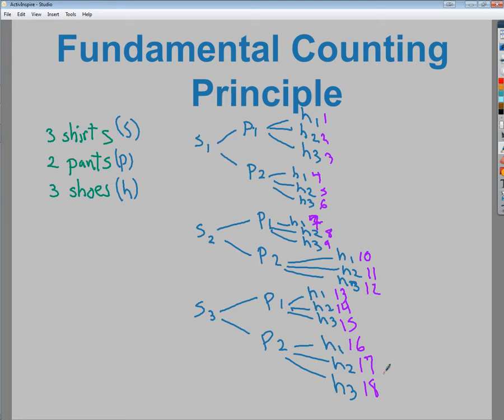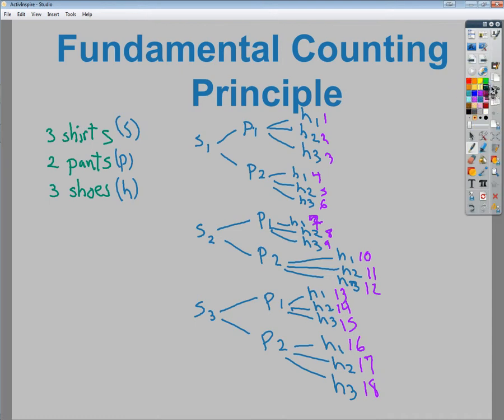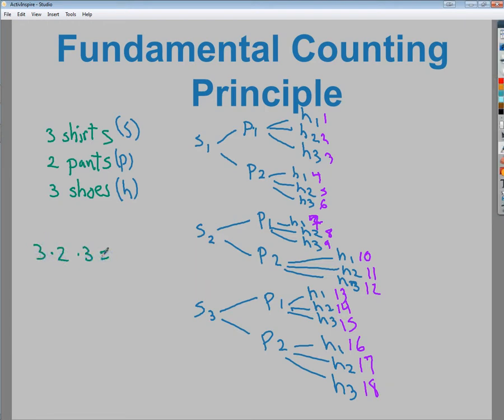Now, why go through all that? You're not going to make a tree diagram every time. So what they've figured out eventually is that if you just multiply the numbers together, you can get the information that you need. So if I have three shirts, two pairs of pants, and three shoes, and all I'm looking for is how many total options I'd have by mixing and matching them, all I have to do is 3 times 2 times 3, which gives me my 18.